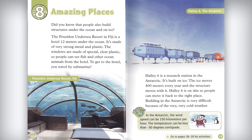Halley 6 is a research station in the Antarctic built on ice. The ice moves 400 meters every year, and the structure moves with it. Halley 6 is on skis so people can move it back to the right place. Building in the Antarctic is very difficult because of the extreme cold. The wind speed can reach 150 kilometers per hour and the temperature can be less than minus 50 degrees centigrade.